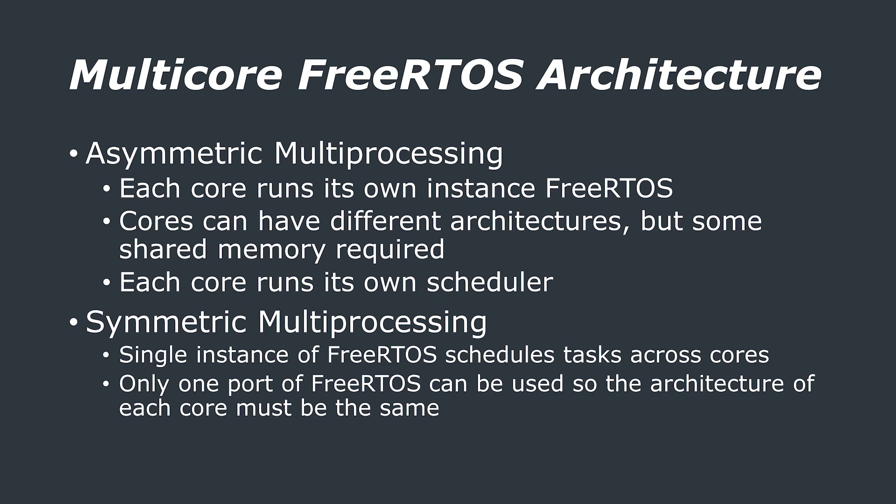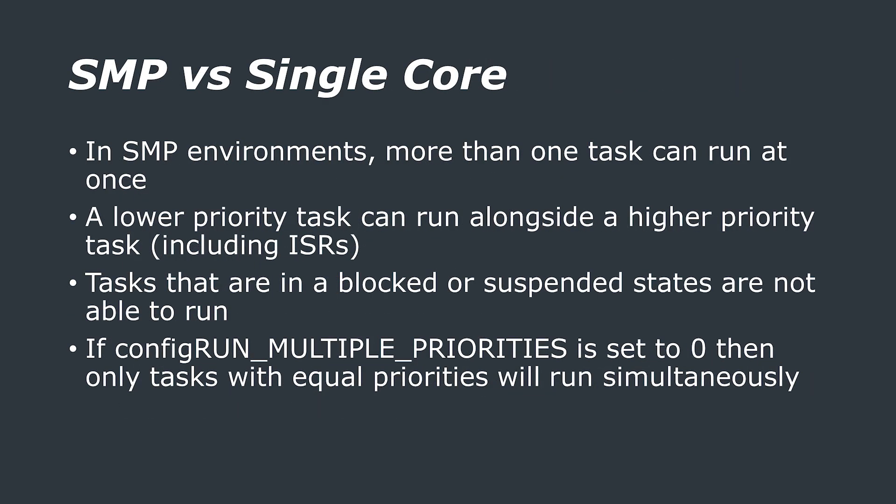For the RP2040, that means we can use both Cortex-M0 Plus cores. The main difference in thinking between SMP and a single-core system is that two tasks can be in the running state at the same time. This means the assumption that a lower priority task only runs when there are no higher priority tasks no longer holds. In a dual-core SMP system, the scheduler picks the high-priority task for core 0, but also picks the lower-priority task for core 1, running both simultaneously. Tasks in a blocked or suspended state are still not selected by the scheduler — that behaviour is unchanged.